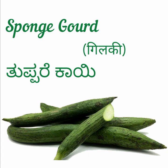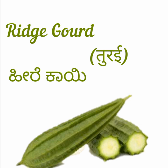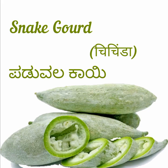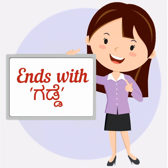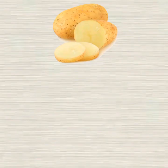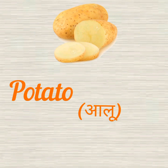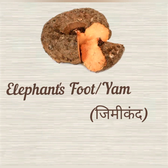Ridge gourd — heere kai. Snake gourd — paddu vala kai. Now, let's learn the vegetables which end with the word gadde. Potato — aloo gadde. Elephant's foot or yam — suvarana gadde.